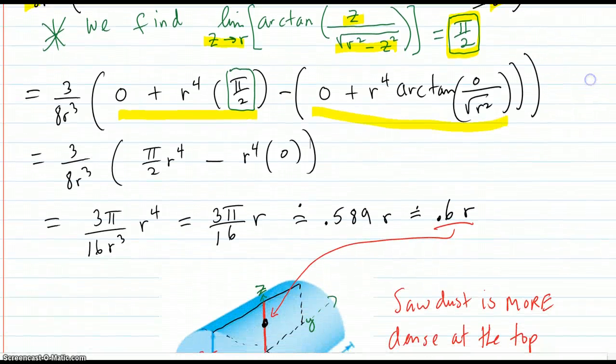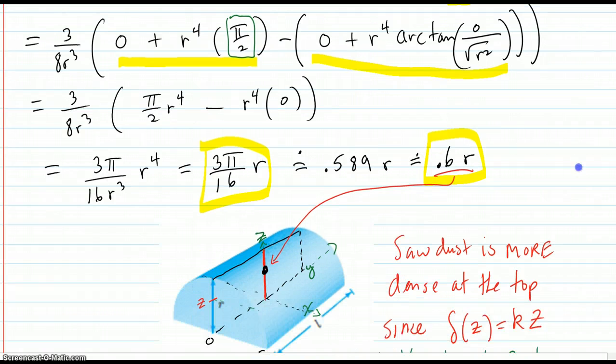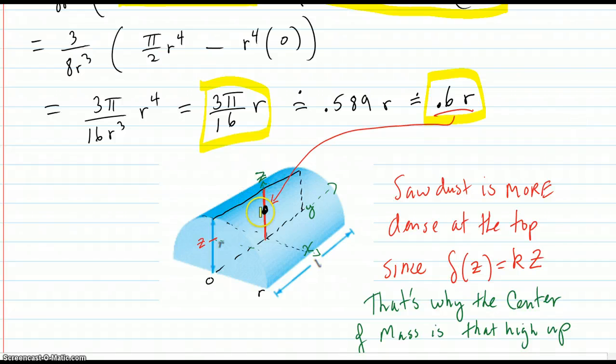Clean it all up. And you end up with 3π over 16 times r. And then I translated that into a decimal so I could mark it off on the graph, about 0.6r. And it's kind of where you expect because if everything was equal with the density, you'd expect the point to be lower because there's so much more material down at the bottom. But since the density function says that the density rises as z goes up, there's a lot of density in the top. And that's why the center of mass is a little bit more towards the top.